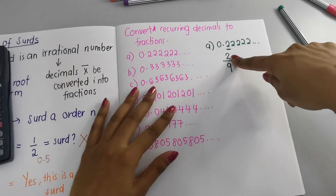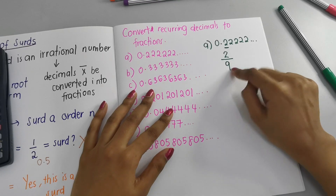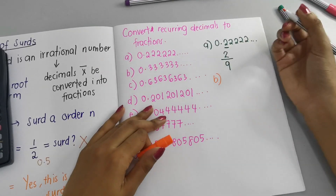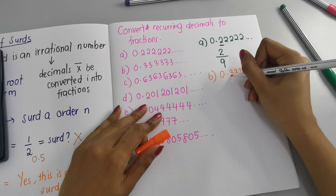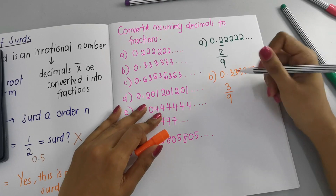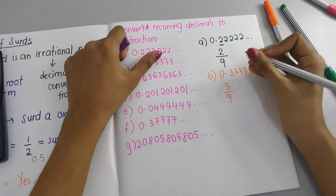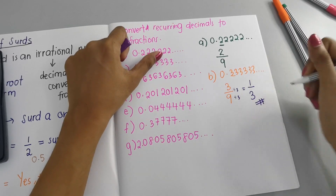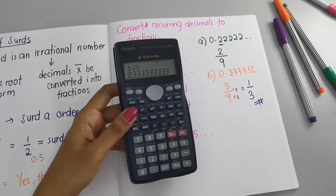So what you do: take the repeating digit and put it divided by 9. The fraction is 2/9 — always remember it's 9. For part (b): 0.3333333... — the digit 3 keeps going on, so I write 3 over 9. Now 3/9 can be simplified: divide both by 3 to get 1/3. So the answer is 1/3. You can check in the calculator: 1 ÷ 3 = 0.333333..., which is a recurring decimal.